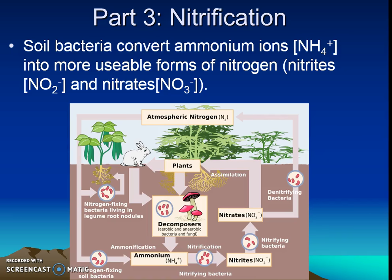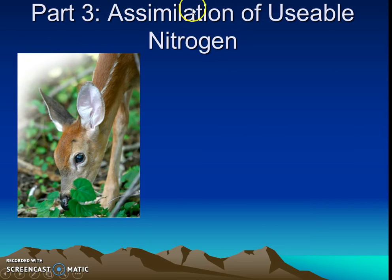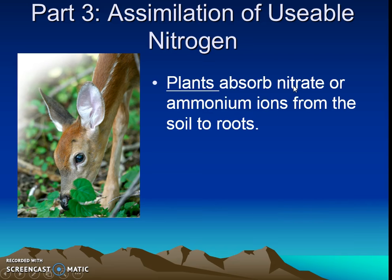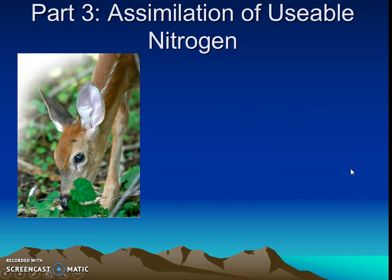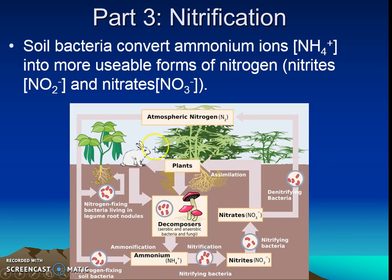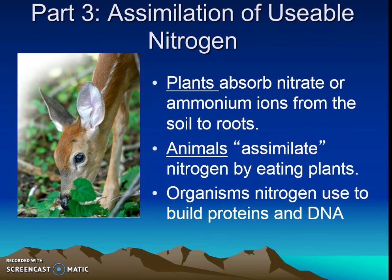Part four is assimilation of usable nitrogen. Plants will absorb these usable forms that are in the soil — or if they were legumes, they already had them. That's how plants get the usable nitrogen, because plants need protein and DNA too. Animals will assimilate nitrogen by eating the plants that got the usable nitrogen. So organisms get usable nitrogen either by plants absorbing it through soil or by animals eating those plants.